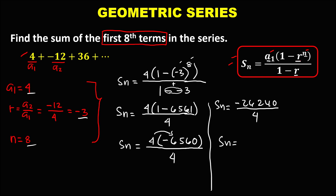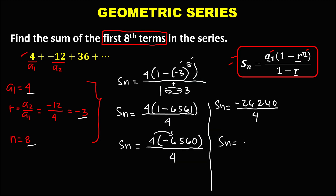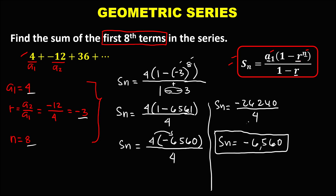To find the sum of this geometric series, negative 26,240 divided by 4 equals negative 6,560. So negative 6,560 is the sum of the first 8 terms of this geometric series.